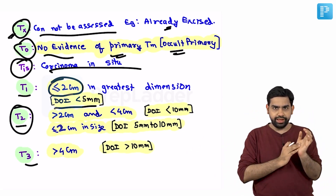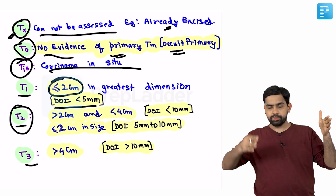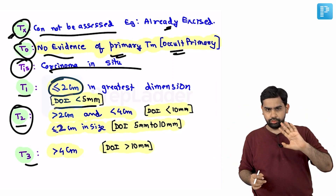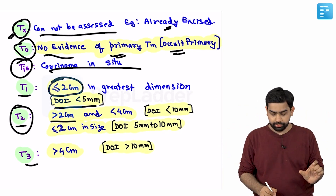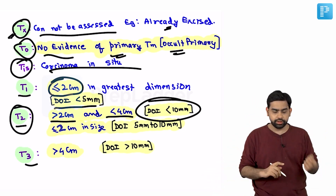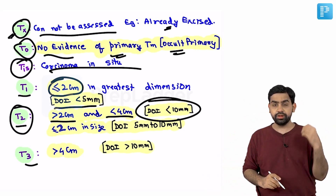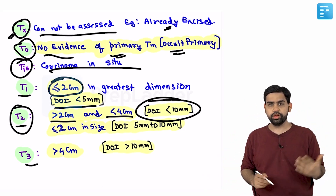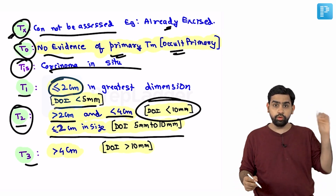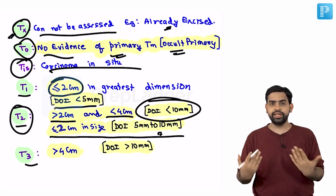For T2, the size can be between two to four centimetres with a maximum depth of invasion up to 10 millimetres. Alternatively, if the tumour is less than two centimetres in size but the depth of invasion is between five to 10 millimetres, it is still classified as T2.